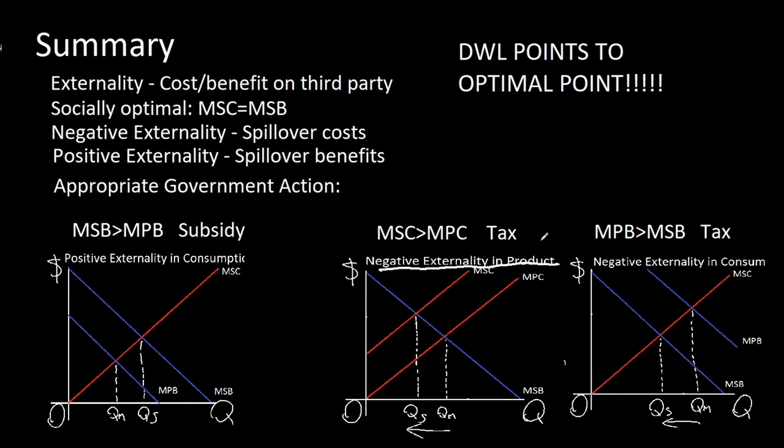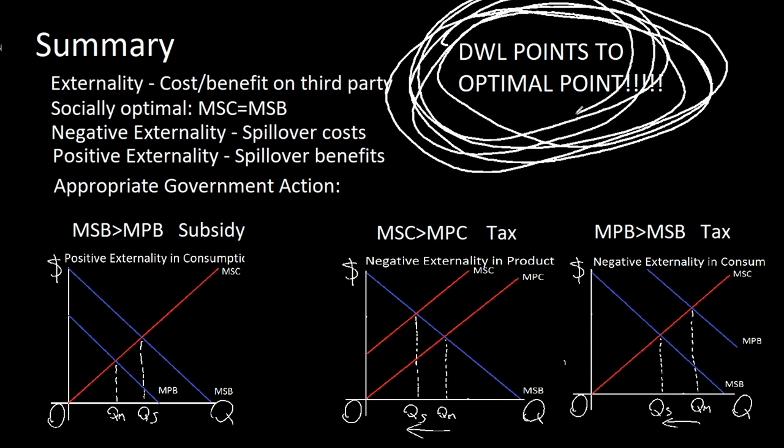Then we have a negative externality in production, and we're going to tax the firm so that's paying all of its costs. And finally, we have a negative externality in consumption. We're going to tax the firm to decrease the consumption of this horrendous good. And you have to remember, deadweight loss points to the optimal point. So many people make the mistake of drawing the wrong arrow.